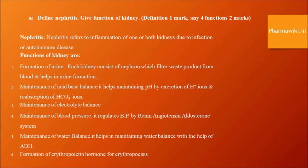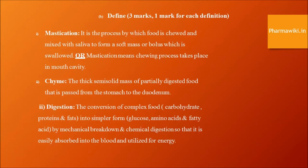Definitions of mastication, chyme, and digestion. Mastication: the process by which food is chewed and mixed with saliva to form a soft mass or bolus which is swallowed; essentially the chewing process that takes place in the mouth cavity. Chyme: the thick semi-solid mass of partially digested food that is passed from the stomach to the duodenum. Digestion: the conversion of complex food into simpler forms by mechanical breakdown and chemical digestion so that it is easily absorbed into the blood and utilized for energy.